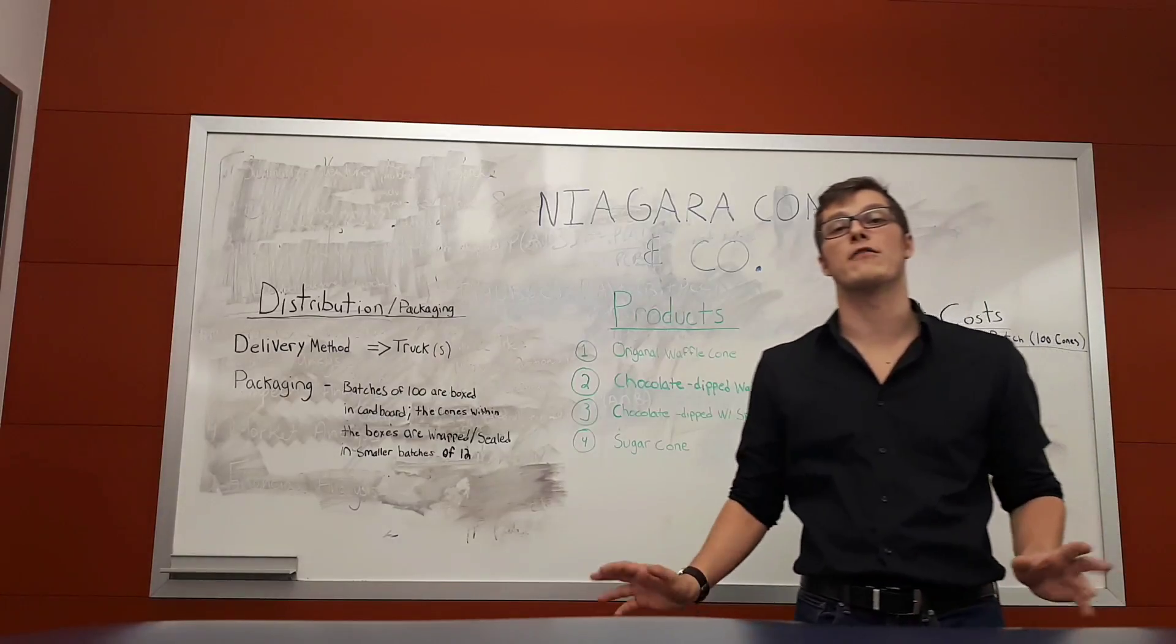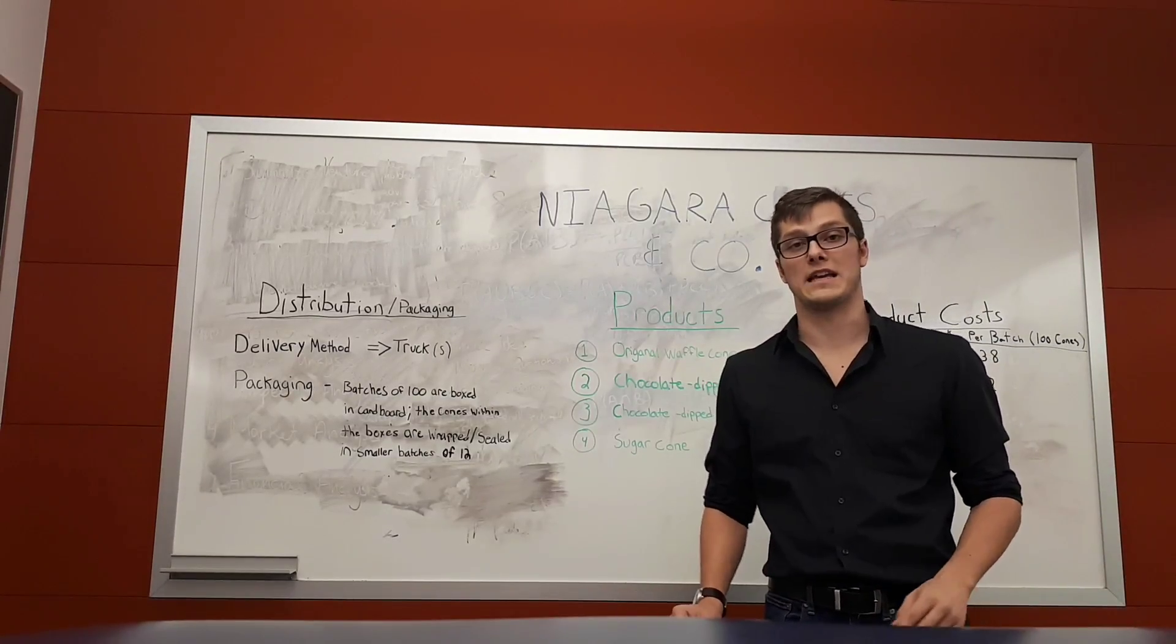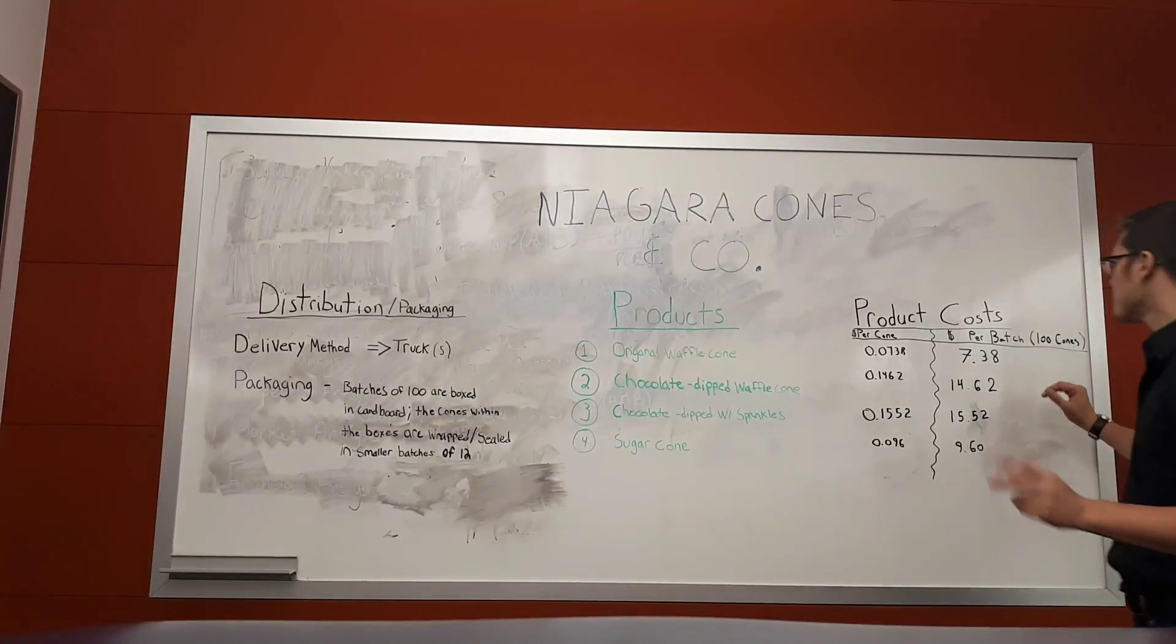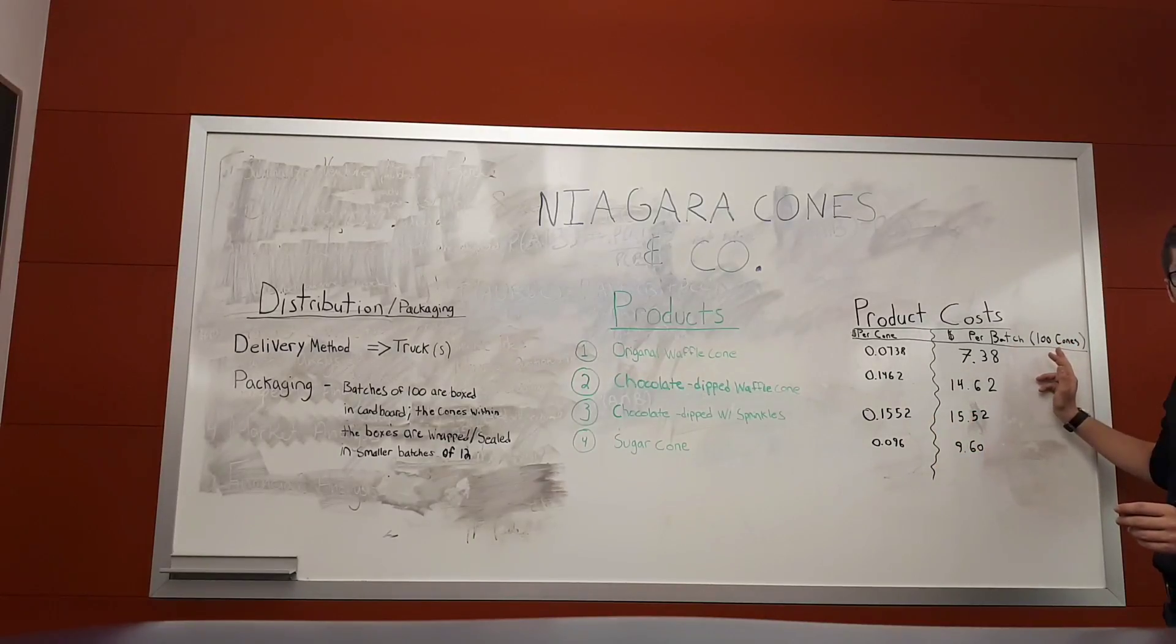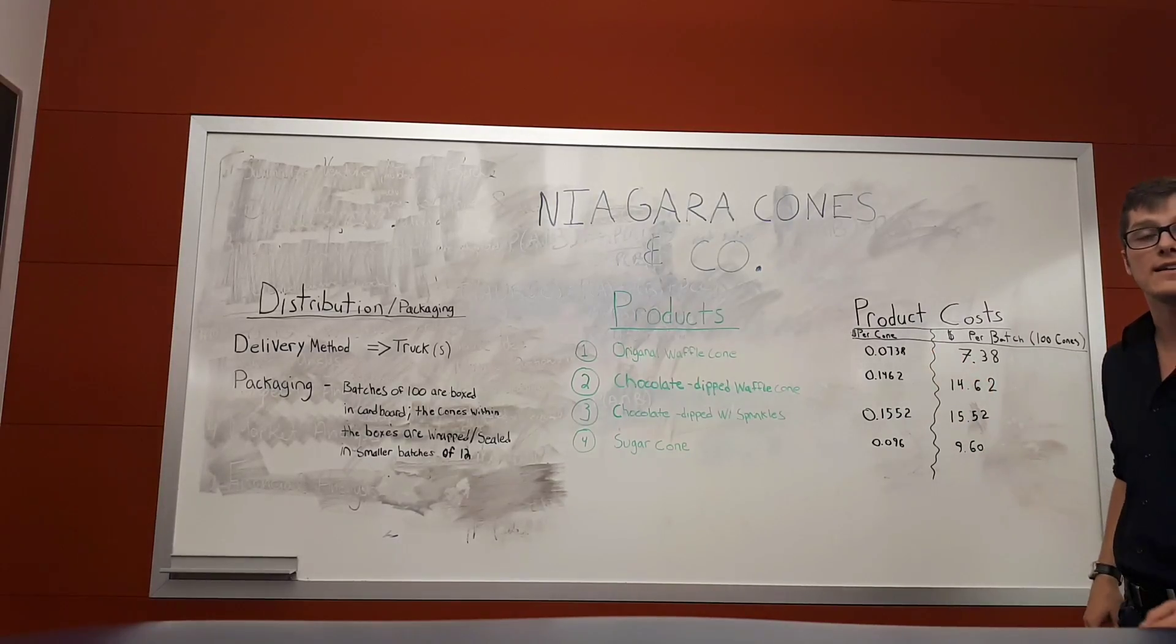Producing these is very cheap and very easy. The costs per batch of 100 cones are relatively small. The costs for a batch of the original waffle cone is only $7.38 per batch. That comes out to 7.38 cents per cone.